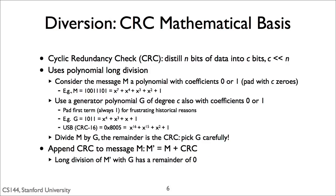So how does a CRC work? It distills these n bits into c bits using something called polynomial long division. You take the bits of a message and use them to describe a polynomial M — each bit in a packet is the coefficient of one term of the polynomial. If the bit is 0, the term is absent; if the bit is 1, the term is present. So, for example, a message of 10011101 is the polynomial x^7 + x^4 + x^3 + x^2 + 1, which is x^0 — because the 7th, 4th, 3rd, 2nd, and 0th bits are set in the message.